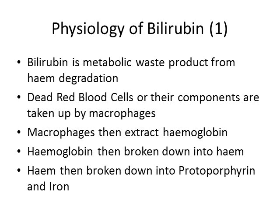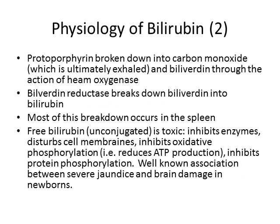This breakdown can happen either in the bloodstream where the red blood cells die and split apart, or in the liver's Kupffer cells, or in the spleen's splenic macrophages. Regardless of whether the red blood cell is taken up by a macrophage or breaks down spontaneously, eventually all those red blood cell components end up in a macrophage, which breaks down the hemoglobin into heme. The heme is then broken into protoporphyrin and iron. The protoporphyrin is then broken down into carbon monoxide, which is eventually exhaled, and what's left over is referred to as biliverdin. The enzyme that does this reaction is called heme oxygenase.